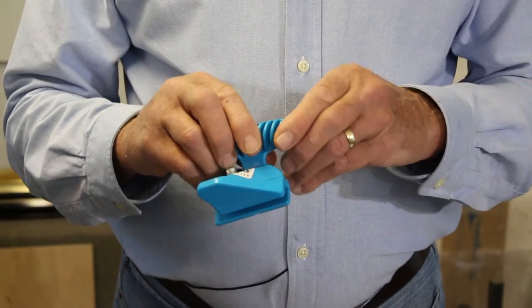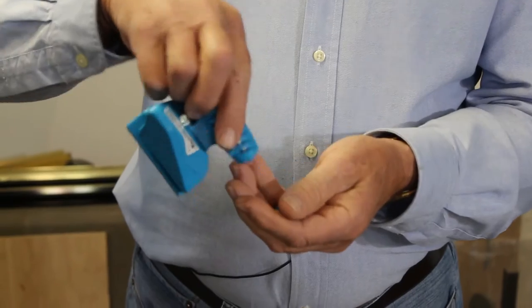To find the blade storage on the rabbit cutter, remove the little cap and there is your blade.